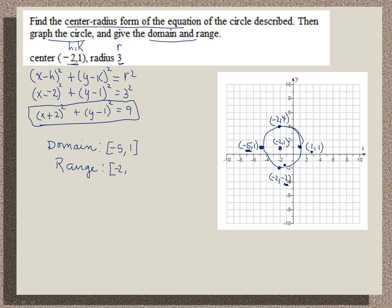And then my highest point on the graph has a y value of 4. So my range goes from negative 2 to 4.